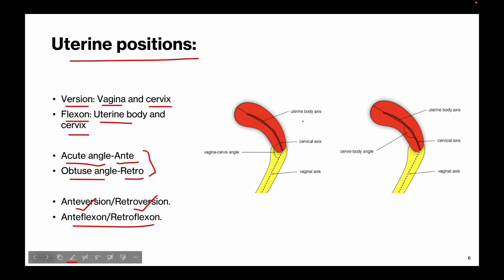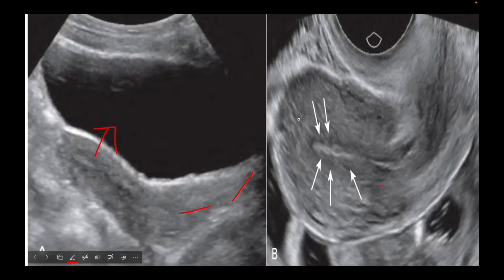To simplify this: if the uterine fundus is facing towards the bladder, this is anteflexion; if it is facing away from the bladder, this is retroflexion. Similarly, if the cervix is directed towards the vagina, this is anteversion; if it is facing away from the vagina, this is retroversion.